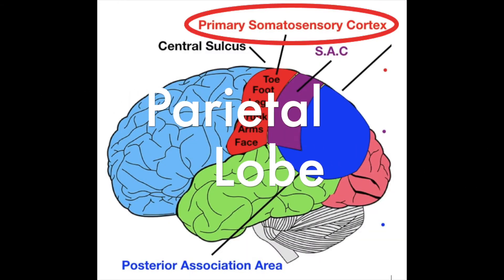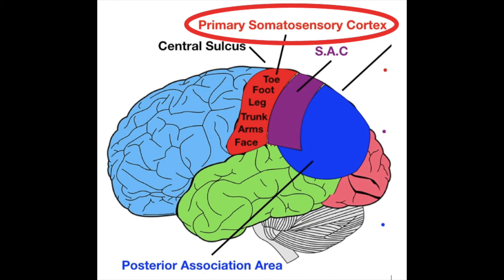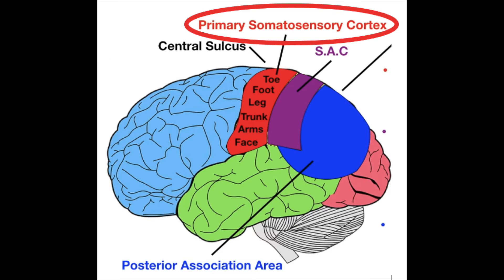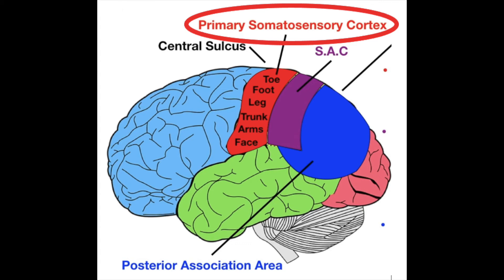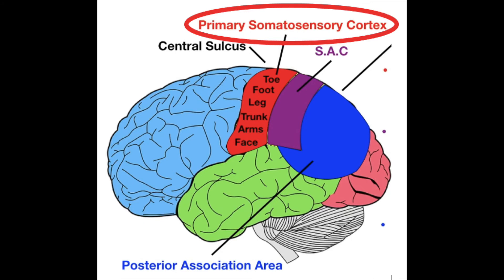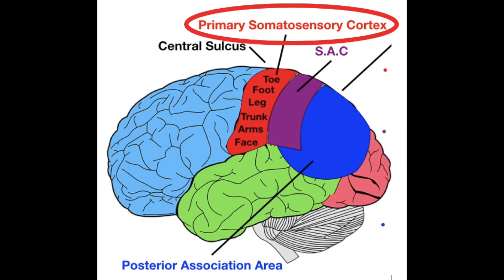Moving on to the parietal lobe. There are three main areas to know. Just after the central sulcus — the post-central gyrus — is the first area, known as the primary somatosensory cortex. The second area is the somatosensory association cortex. And finally, the posterior association area, which is mainly in the parietal lobe but also dips into the occipital and temporal lobes.